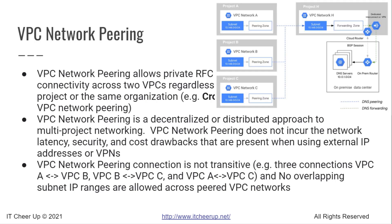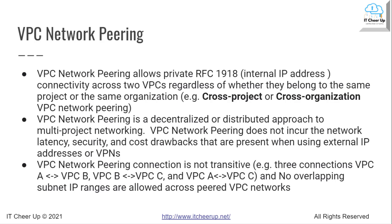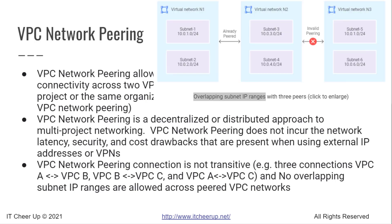VPC network peering is a decentralized or distributed approach to multi-project networking. It does not incur the network latency, security, and cost drawbacks present when using external IP addresses or VPNs. VPC network peering connections are not transitive. For example, if there are three VPCs, you need to create three connection pairings among them — a pairing between VPC A and VPC B, VPC B and VPC C, and also VPC A and VPC C. Google Cloud also ensures there are no overlapping subnet IP ranges allowed across VPC networks.